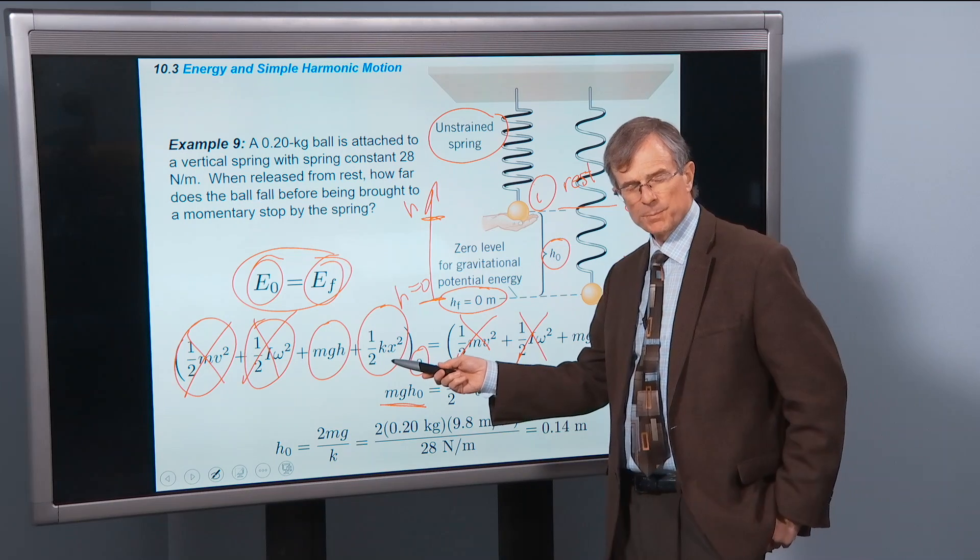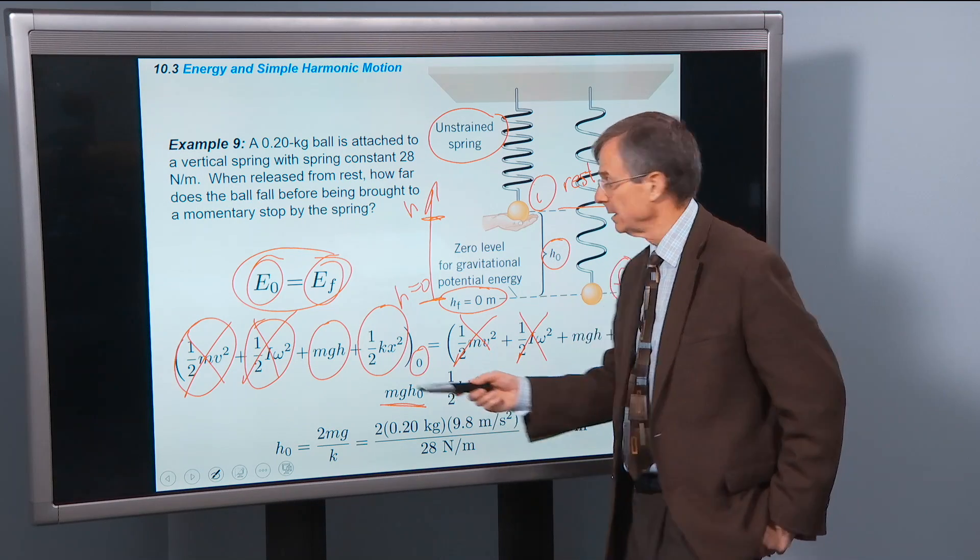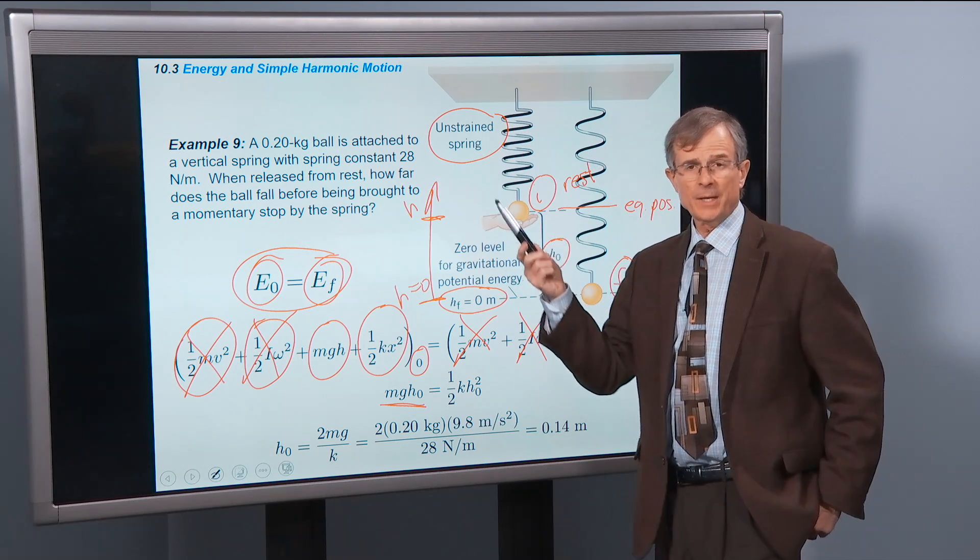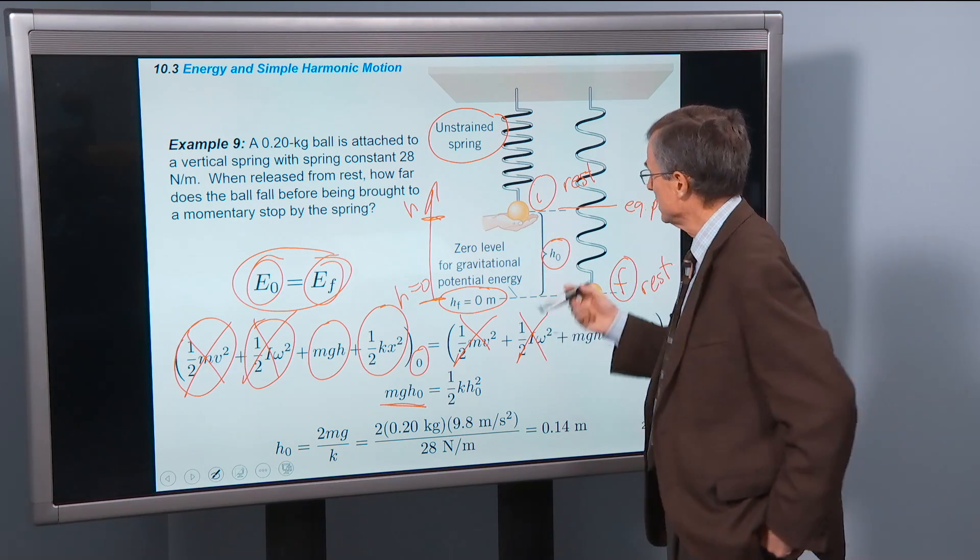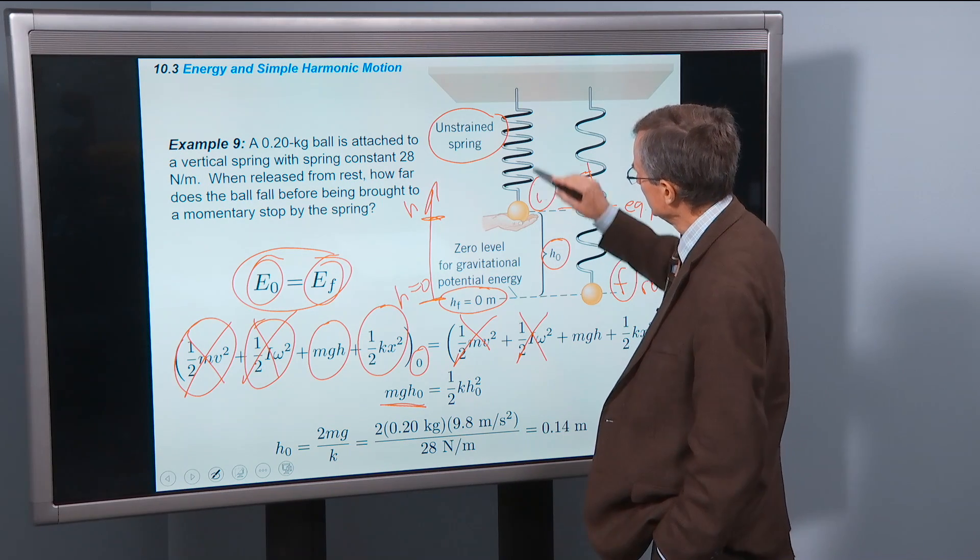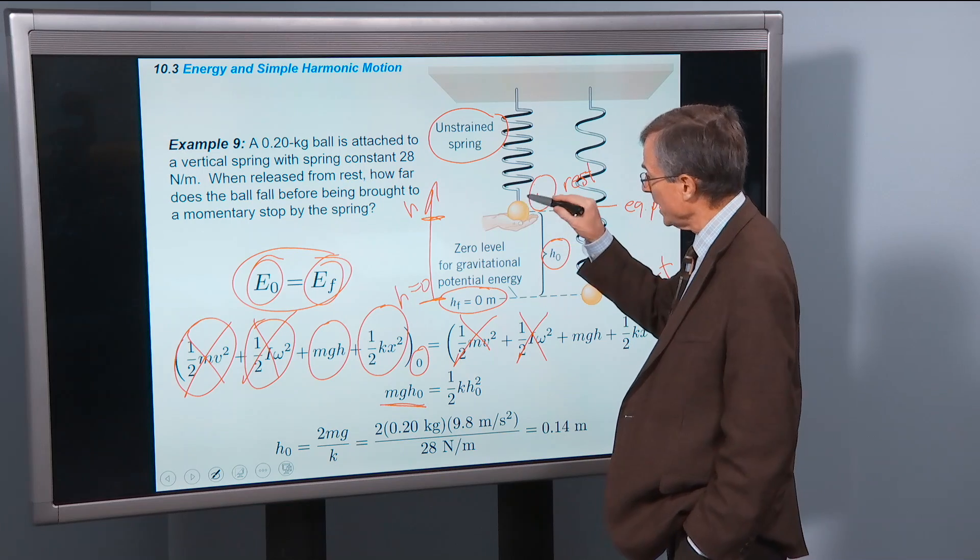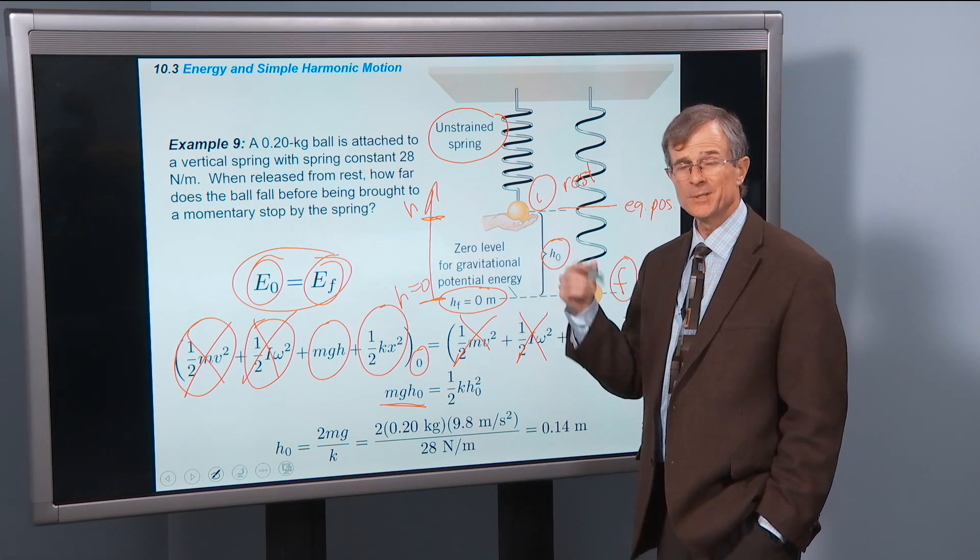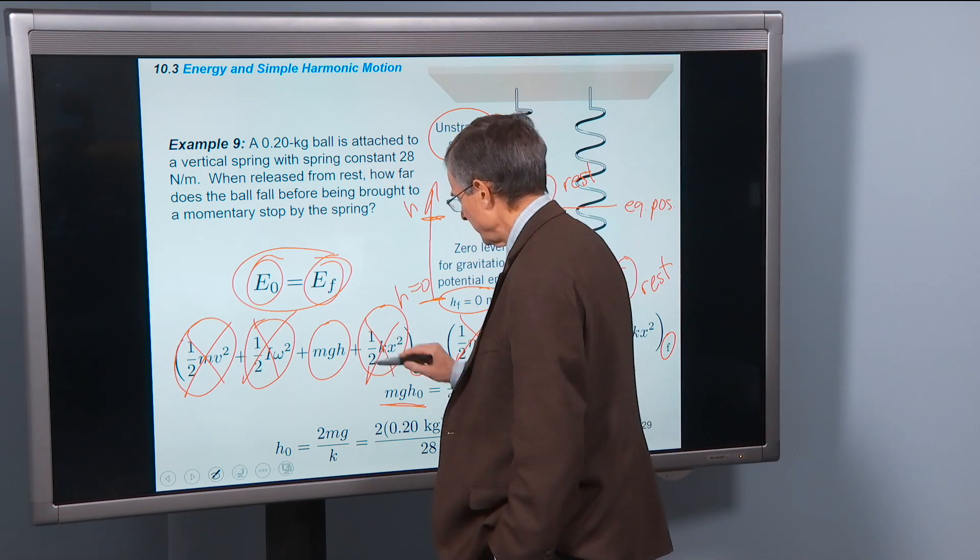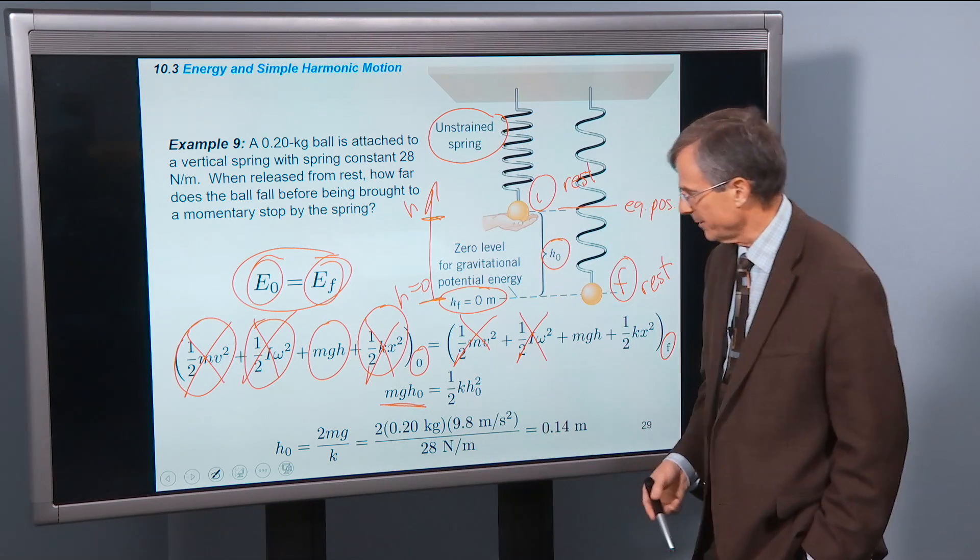So we'll get the mass times g times h naught initially. That's that term right there. And then what about the spring potential energy at this initial spot? Well the spring is unstrained. It's not stretched, it's not compressed. And so the displacement of this from equilibrium is going to be zero. So this term doesn't give us anything either. So all we get on the left hand side is mgh.